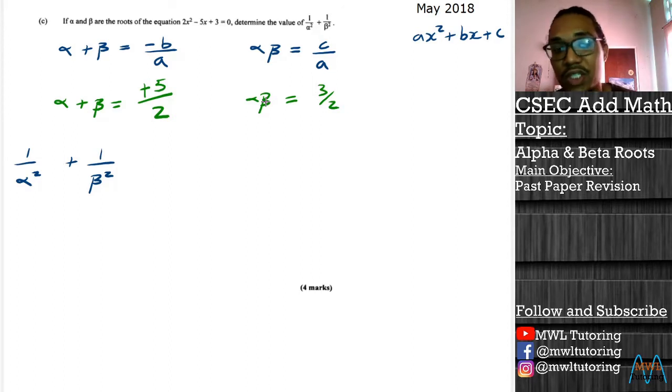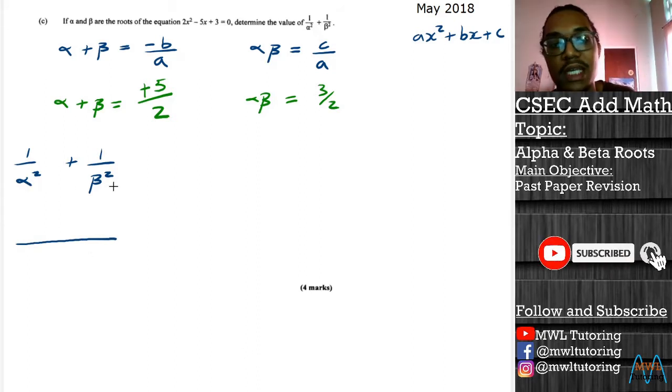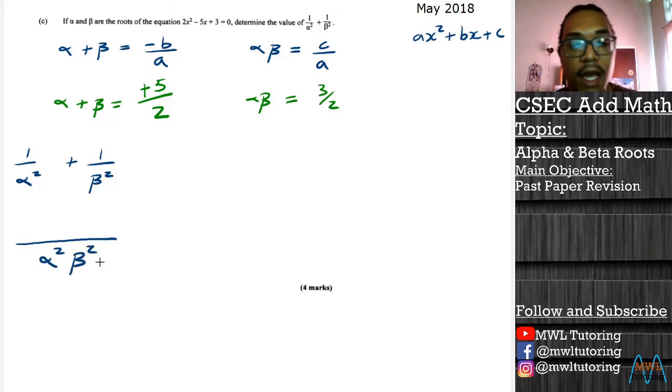And now to actually solve this question, what we have to do is find the LCM of the fractions. The LCM we just multiply the two denominators alpha squared beta squared. Then we do our usual division and multiplication: alpha squared by beta squared divided by alpha squared and the alphas cancel off and we end up with beta squared. And then the opposite just happens here, the beta squares cancel off and we end up with alpha squared here.